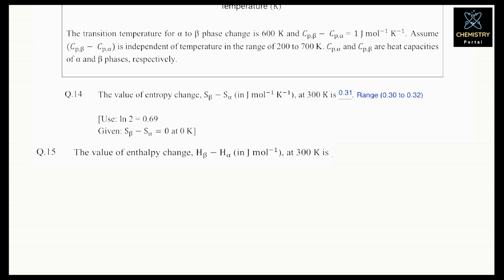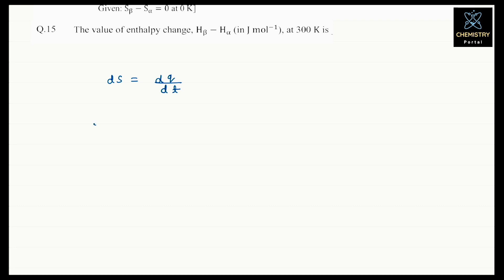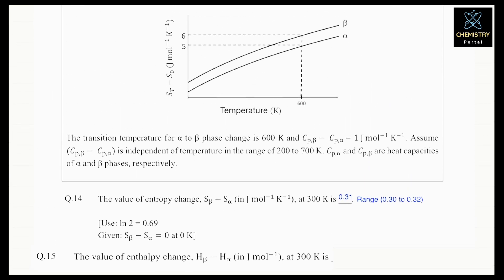We know the formula ds equals dq divided by T. For the full change, we will do integration: integration of ds equals integration of dq by T. In the question, the value is given at 600 K, but we have to find it for 300 K.